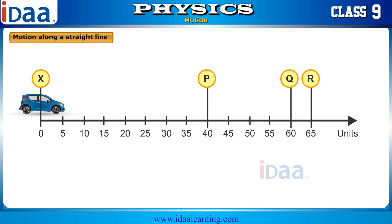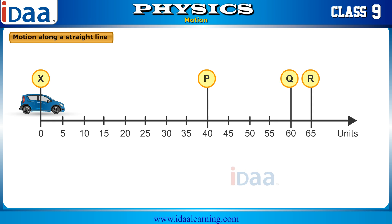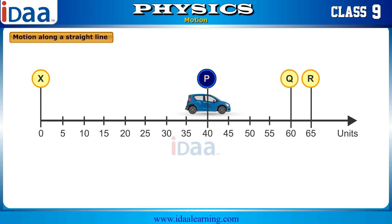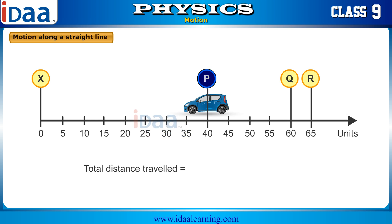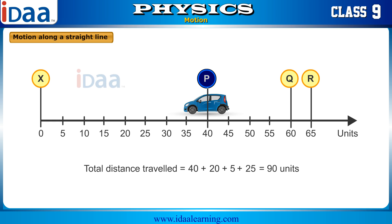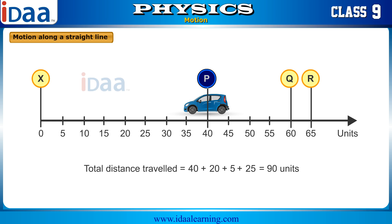Motion along a straight line. We will try to understand motion in a straight line from the following example. Imagine an object moving along a straight line with markings at regular intervals. The object moves from starting point X to P, Q, R and then back to P. The total distance travelled is 40 plus 20 plus 5 plus 25, which is 90 units. In physics, the word distance is used to indicate how much the object moved, irrespective of direction, with respect to a reference point.